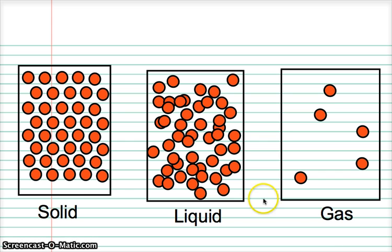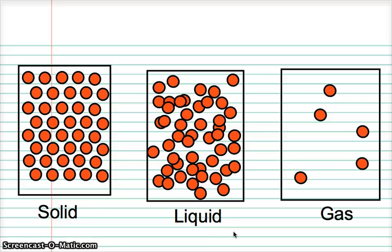The density of a gas is a lot lower because the particles have spread out so that they have a lot more space between them. So how much further apart are gas particles than liquid and solid particles? We know that air is around a thousand times less dense than water, so we can use this piece of information to estimate how much further the particles are apart.